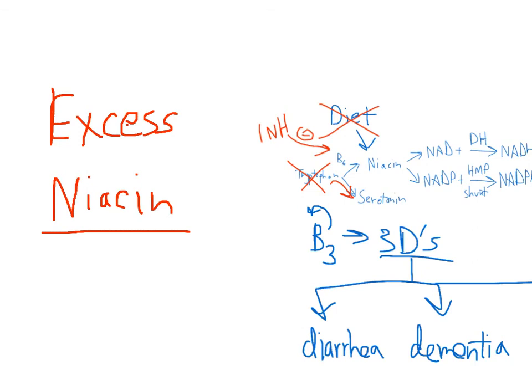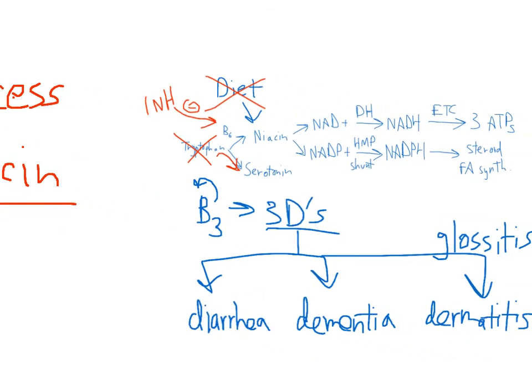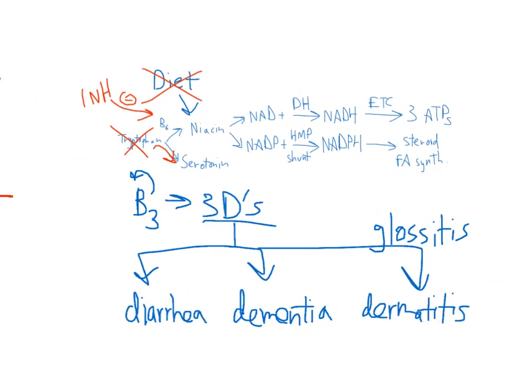So that's it for niacin. Let's do a quick review. Tryptophan is a precursor to both niacin and serotonin. It uses the cofactor B6 to make niacin. Niacin is a precursor to NAD+, which is used in dehydrogenation reactions, which makes NADH, which can then be used in the electron transport chain to make three ATPs. Niacin can also be used to make NADP+, which is used in the HMP shunt to make NADPH, which is then used for steroid and fatty acid synthesis and anabolic reactions.